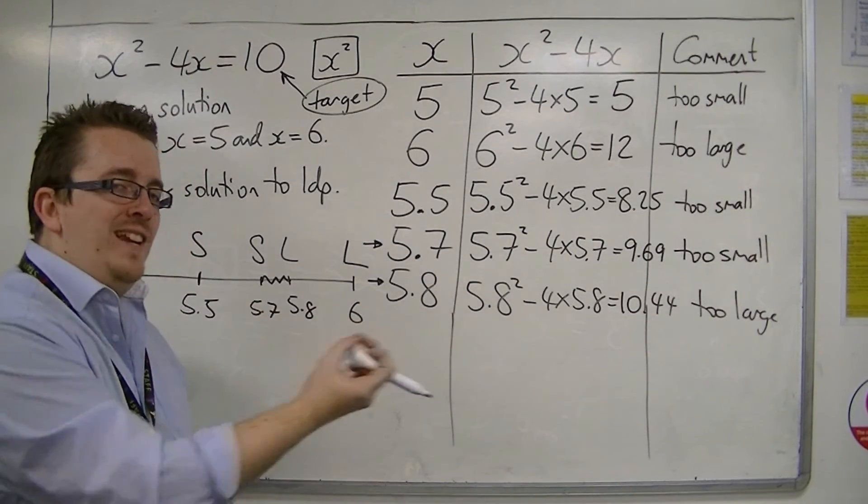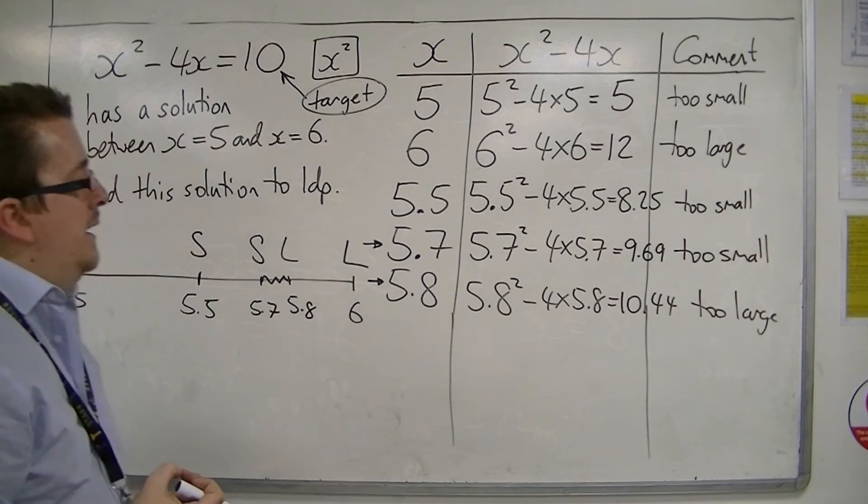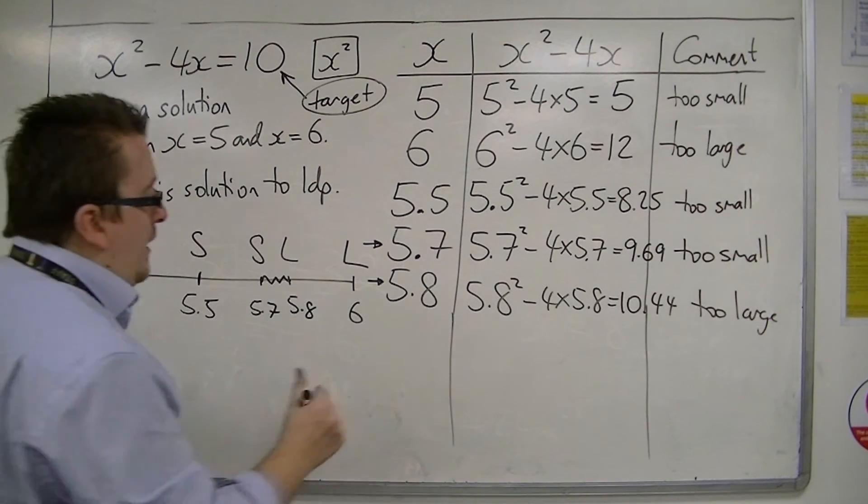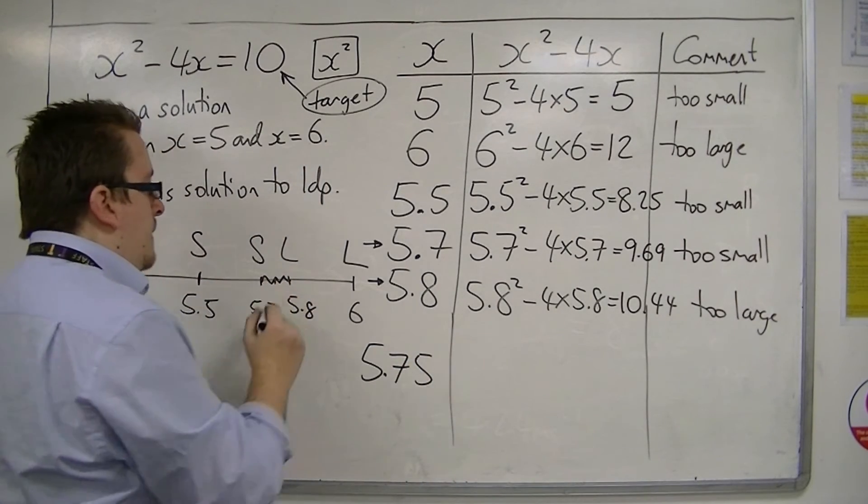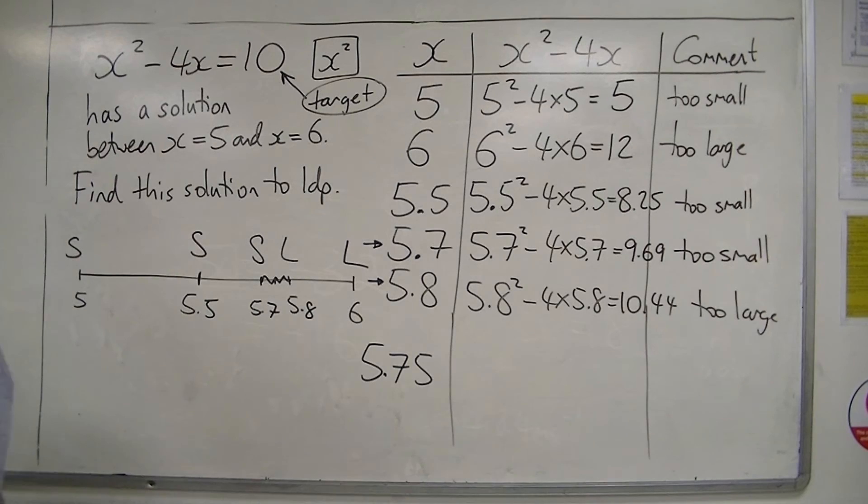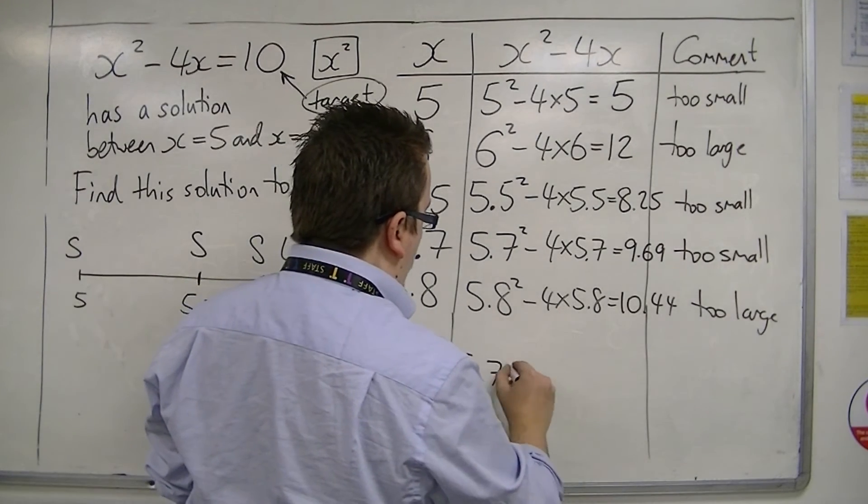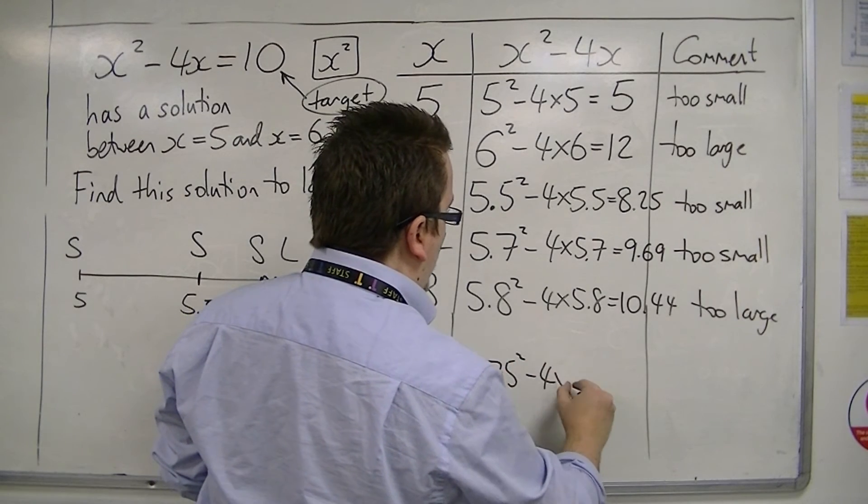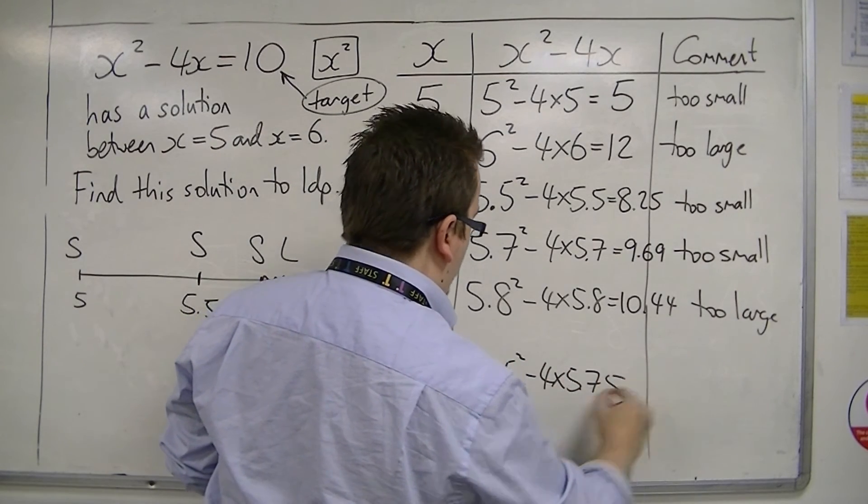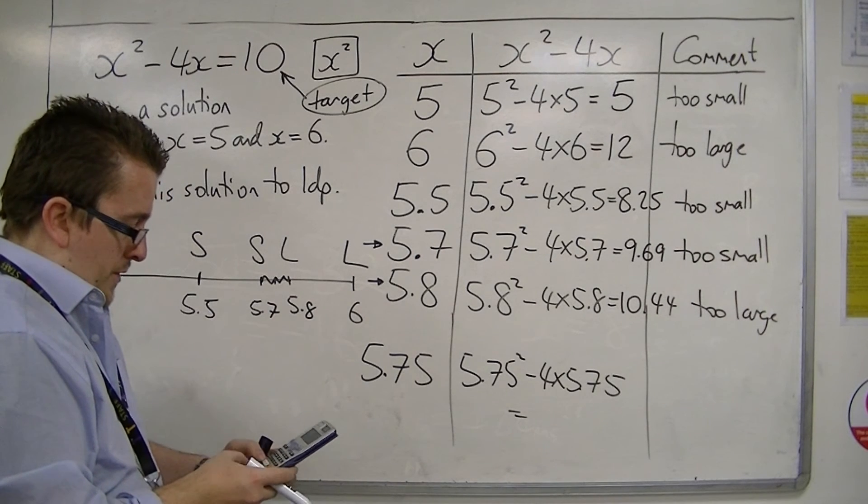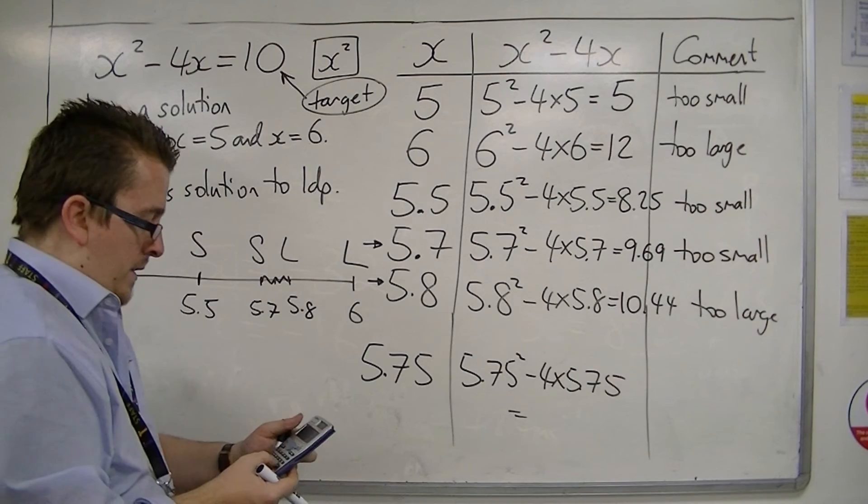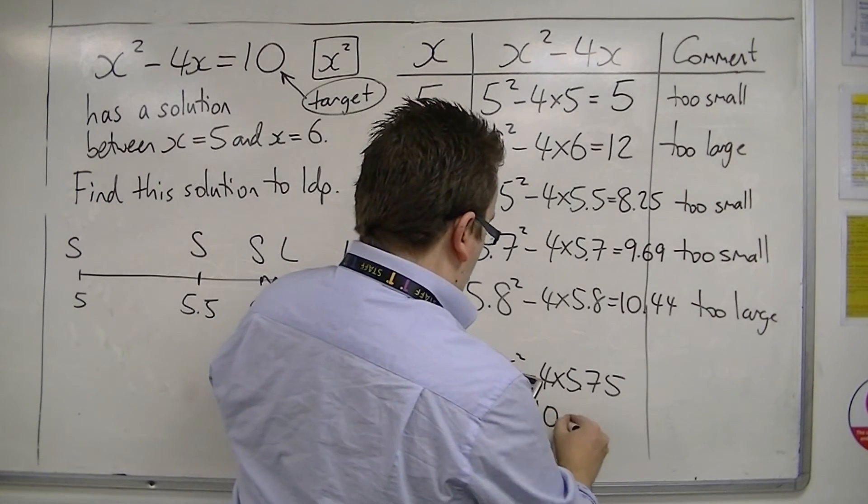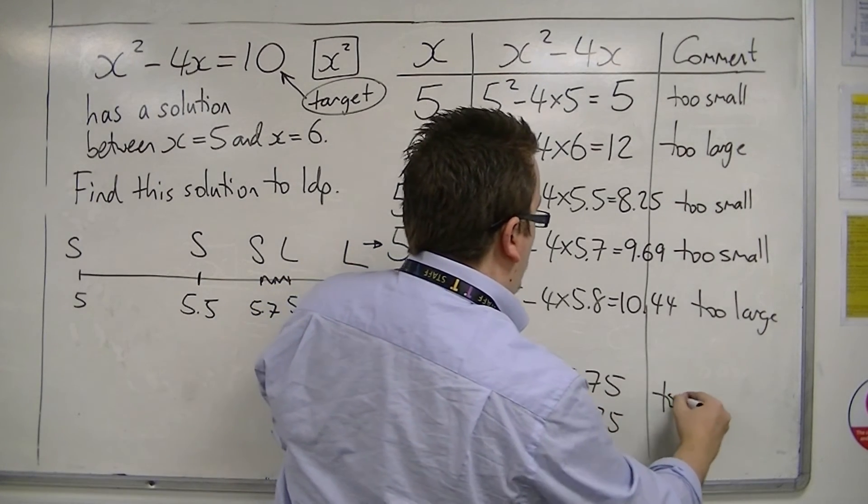And I need to determine which it is closer to. And the way to do that is to substitute in 5.75, the midway point. So 5.75 squared, take away 4 lots of 5.75. 5.75 squared, take away 4 lots of 5.75, is 10.0625. That's too large.